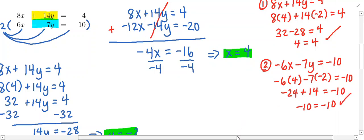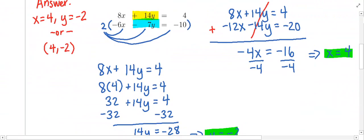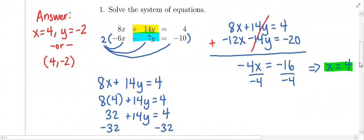So this is a correct answer. For this system of equations to make both equations true, x has to be 4, and y has to be negative 2.